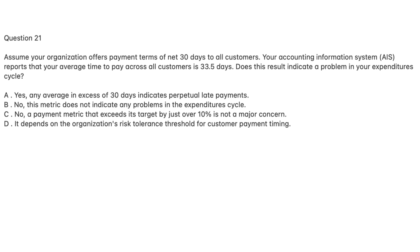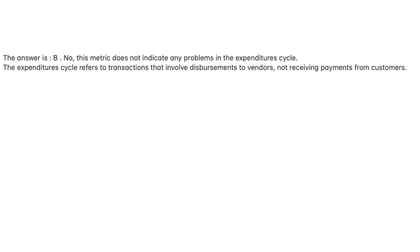Question 21. Assume your organization offers payment terms of net 30 days to all customers. Your AIS reports that your average time to pay across all customers is 33.5 days. Does this result indicate a problem in your expenditure cycle? A. Yes, any average in excess of 30 days indicates perpetual late payments. B. No, this metric does not indicate any problems in the expenditure cycle. C. No, a payment metric that exceeds its target by just over 10% is not a major concern. D. It depends on the organization's risk tolerance threshold for customer payment. The answer is B. The expenditure cycle refers to transactions that involve disbursements to vendors, not receiving payments from customers.